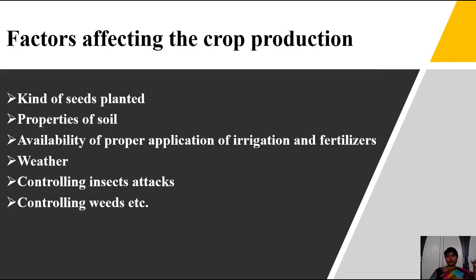The second factor is properties of soil. Soil pH should be between 5.5 and 7.5 — then only the soil can produce good plants and good productivity. We must constantly observe the physical, chemical, and biological nature of the soil.